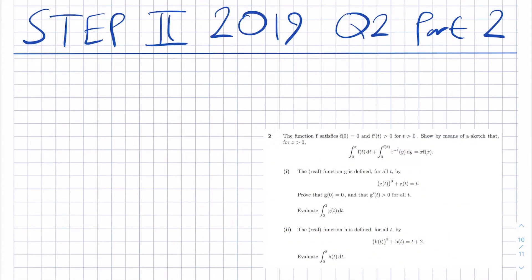The question says, the real function g is defined for all t by g(t) cubed plus g(t) is equal to t.